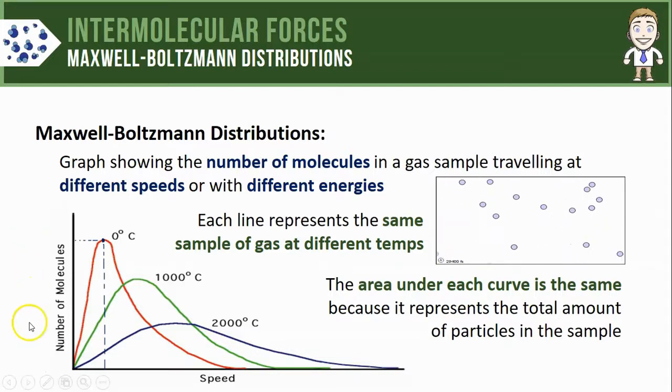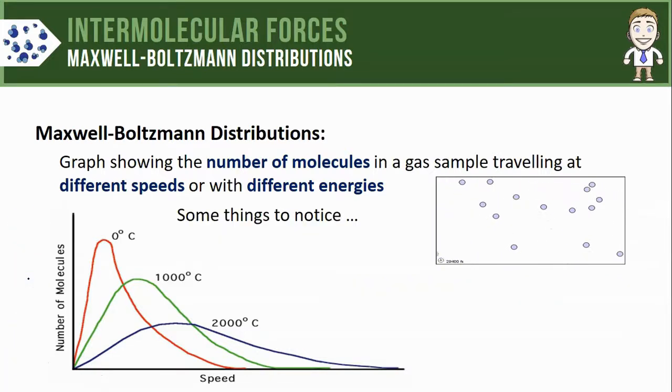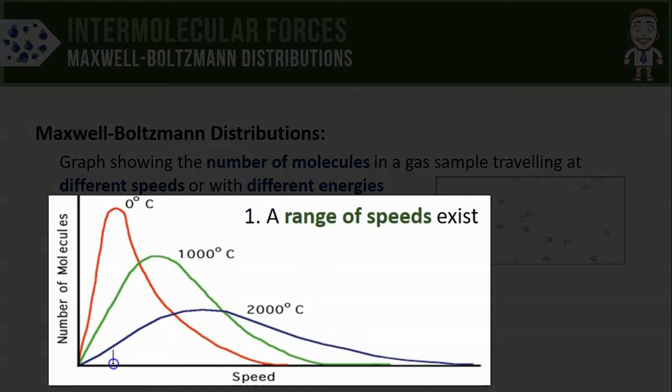Here are some important things to notice about a Boltzmann distribution curve. First of all, a range of speeds exists. All the particles do not travel at the same speed. Even the very hot sample at 2000 degrees has some particles that go very slow, some particles that go very fast, and again the peak of that curve represents the speed that most of the particles are traveling at.